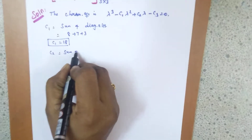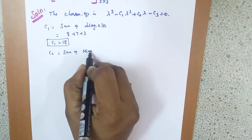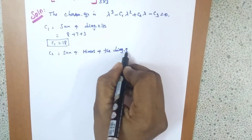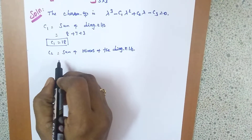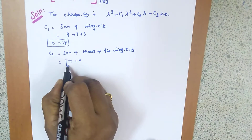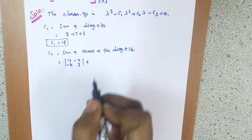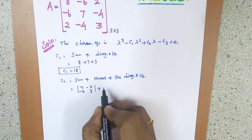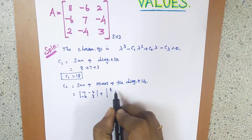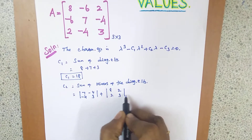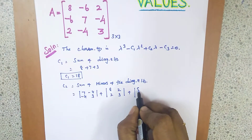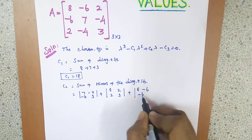C2 is the sum of the minors of the diagonal elements. The first diagonal element is 8 — omit its row and column, and take the minor: |7, -4; -4, 3|. The second diagonal element is 7 — take the minor |8, 2; 2, 3|. The last diagonal element is 3 — take the minor |8, -6; -6, 7|.